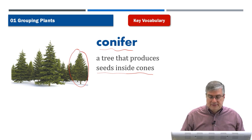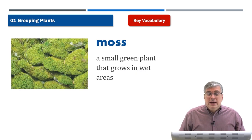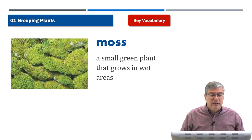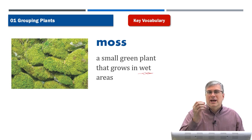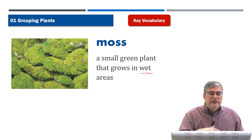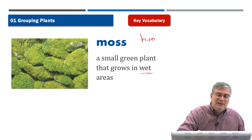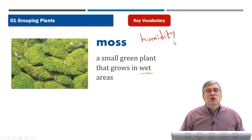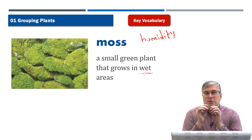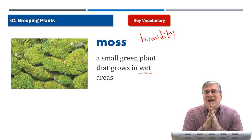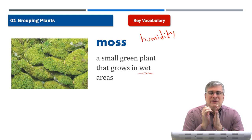Next we have 'moss.' Moss is a small green plant that grows in wet areas, usually on rocks or buildings. Moss needs water and humidity — water in the air — to grow. If there's a lot of humidity in the climate, there's a good chance that moss will grow. It also grows on trees. When I was growing up in the American West, people said if you want to know directions, moss always grows on the north side of the tree.